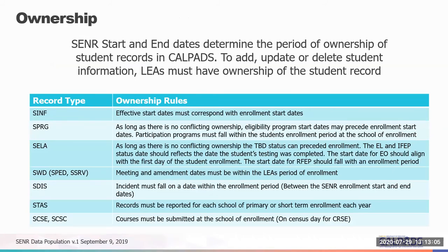Ownership is a key concept. The student enrollment start and end dates determine the period of ownership for student records in CALPADS. To add, update, or delete student information and all associated records, LEAs must have ownership of the student record. This means you can update, change, or delete records in CALPADS that are associated with your period of enrollment and only your period of enrollment.